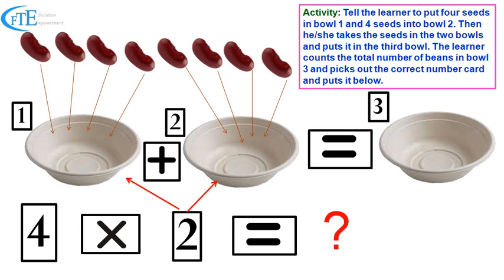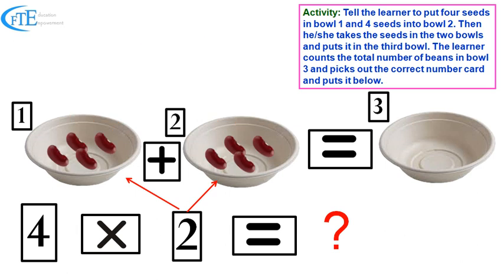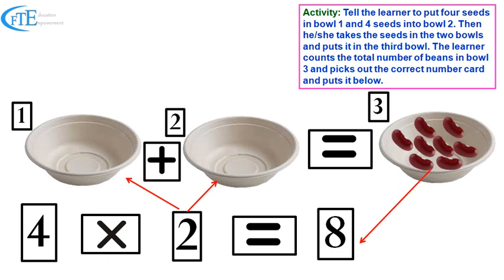Let the child put four counters into the first bowl and then four counters into the second bowl. Then let the child take all the counters in bowl one and bowl two and put them into bowl three.